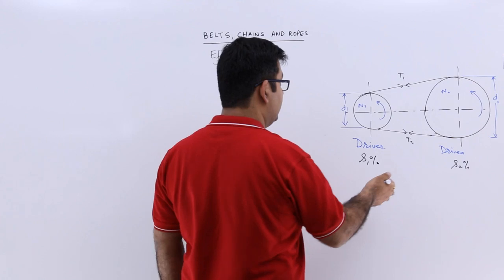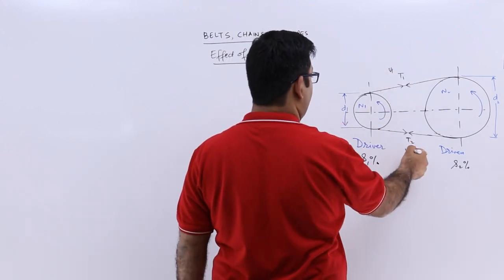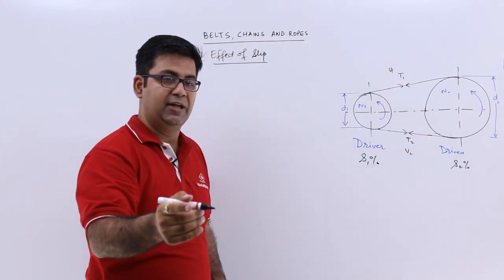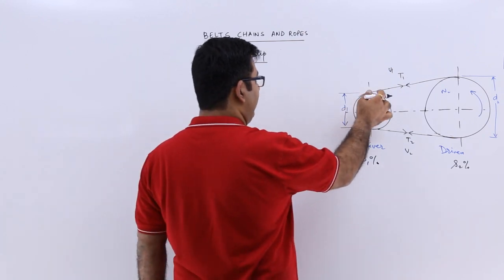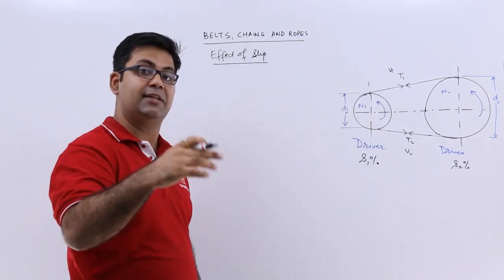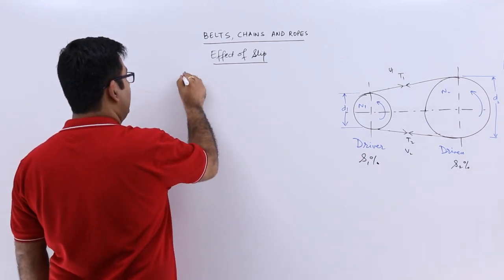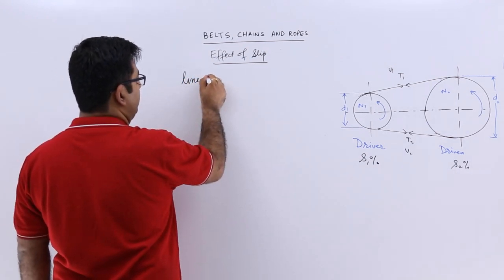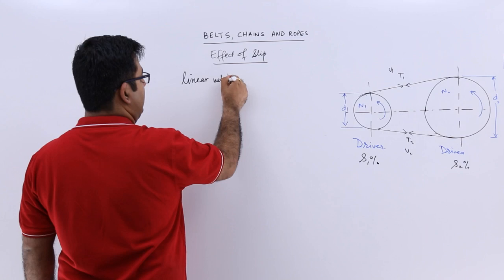The linear velocity without slip is v1 and v2, we know this. So the velocity between the belt and the driver considering the slip would be the linear velocity between belt and driver.